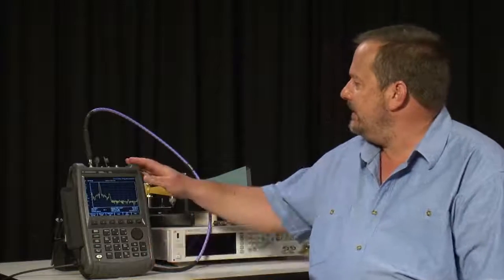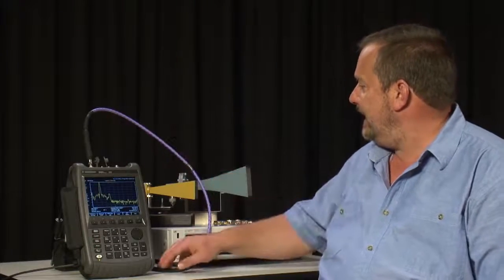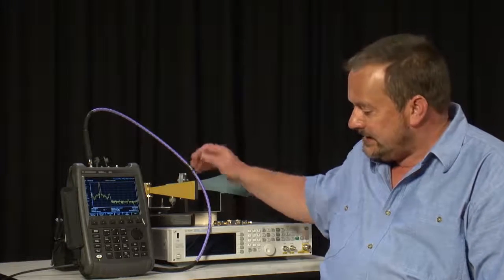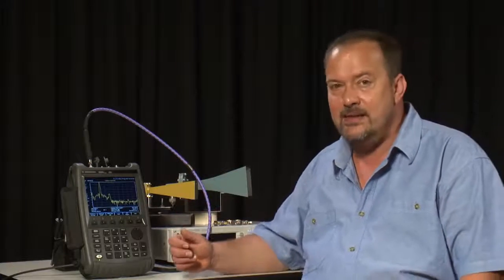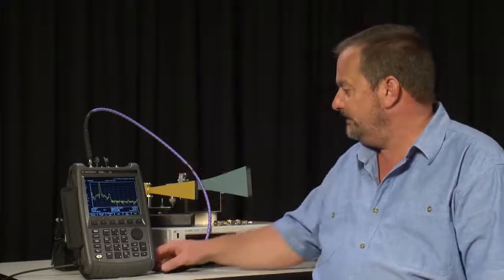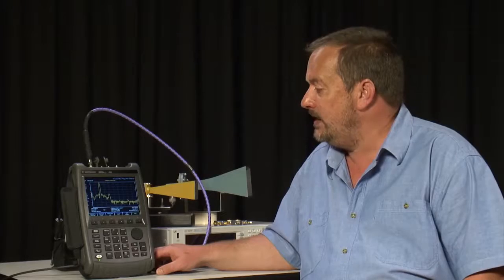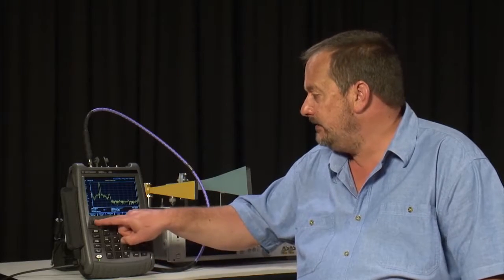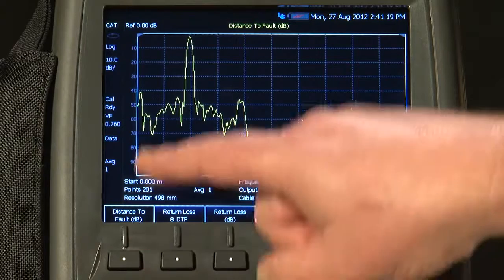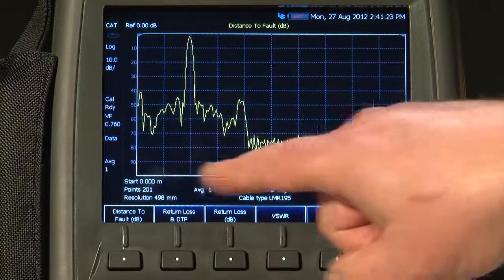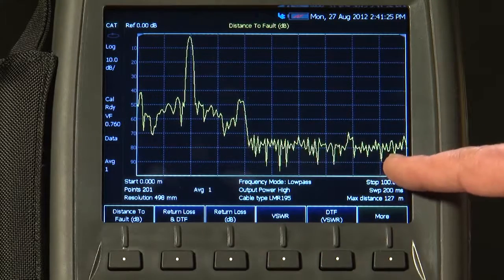So in this setup here, I am still using the short test cable, and I am still using the same X-band microwave horn antenna, but now I have got a length of cable, perhaps 10 or 20 meters, in between the two. So if we want to test that cable and any joiners that may be in circuit as well, then we press Distance to Fault. We are still measuring Return Loss on the Y-axis in dB, but on the X-axis, we are now measuring Distance.